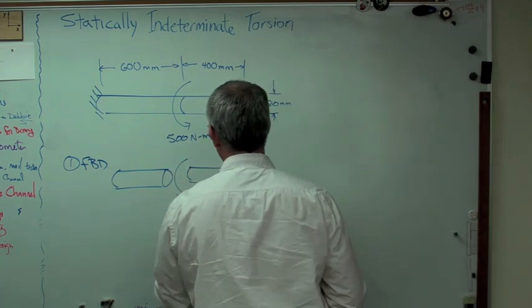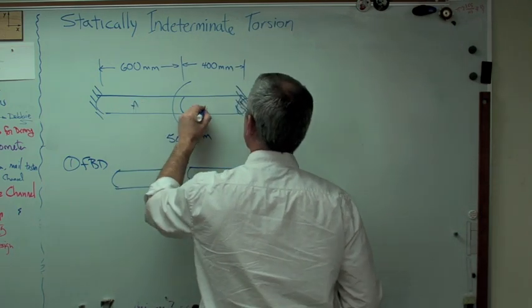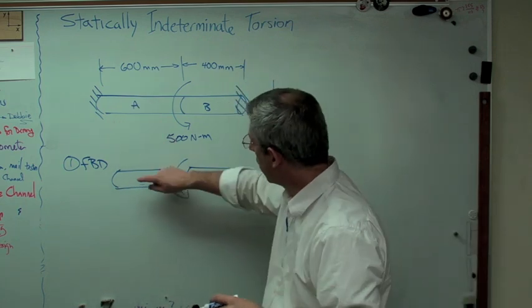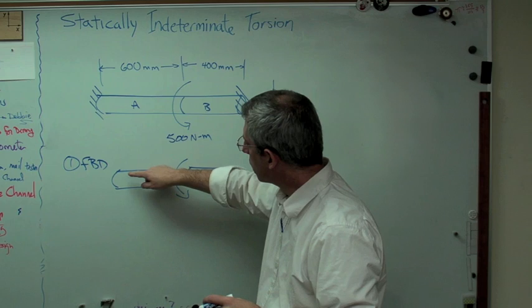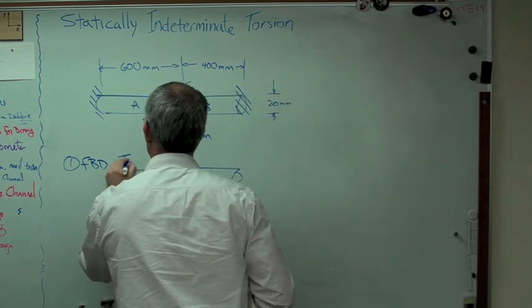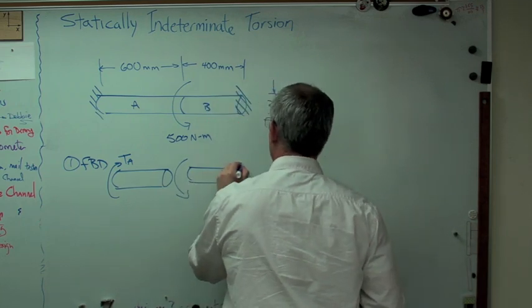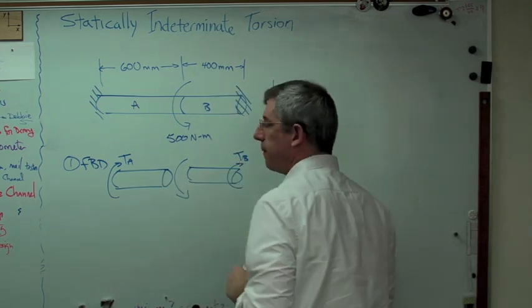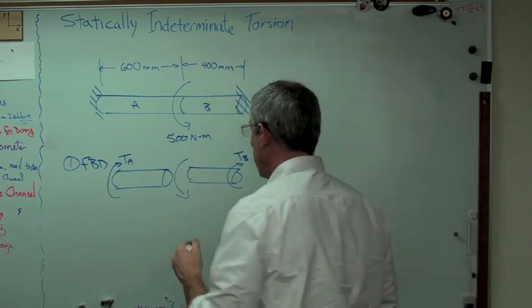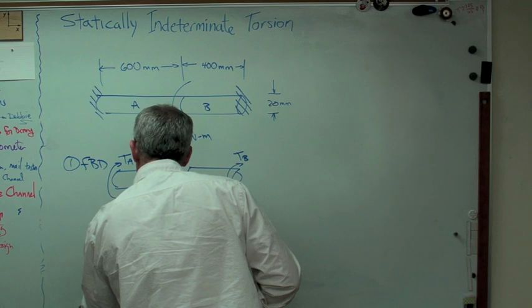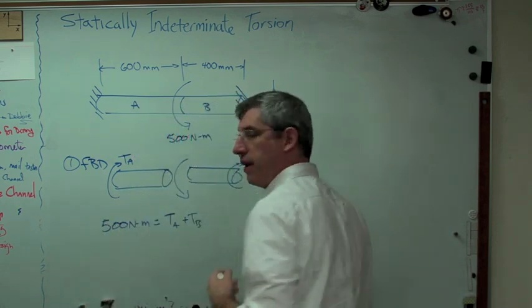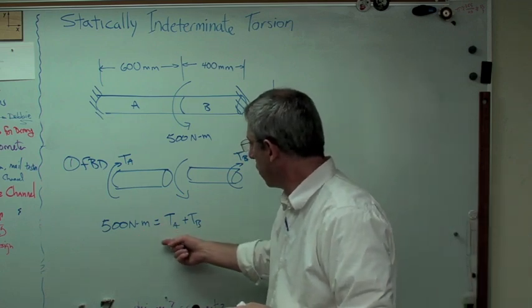We can draw lots of different free body diagrams. I'm going to draw mine this way. So I've got a torque here, and I'm going to call this A and that B. Section A and Section B. So I've got a resisting torque there, a reaction torque, and I'll call that TA, and I've got a reaction torque there, which I will call TB. Well, since the sum of the moments has to be zero, we know that 500 Newton meters equals TA plus TB.